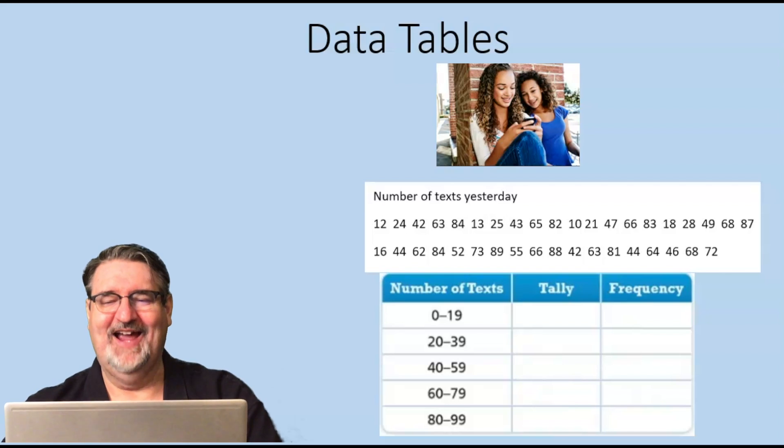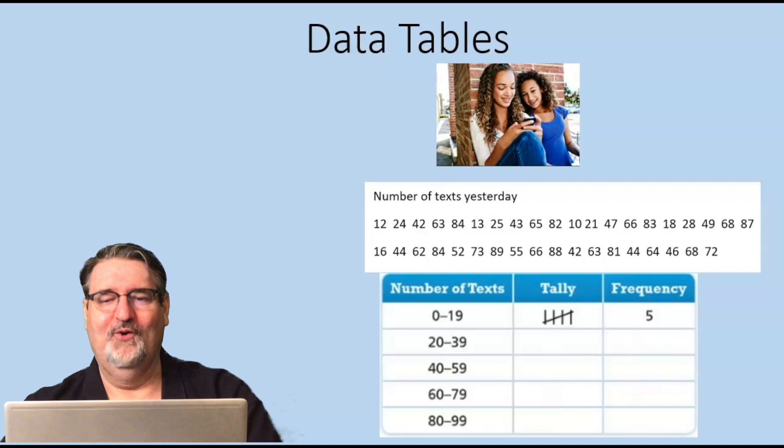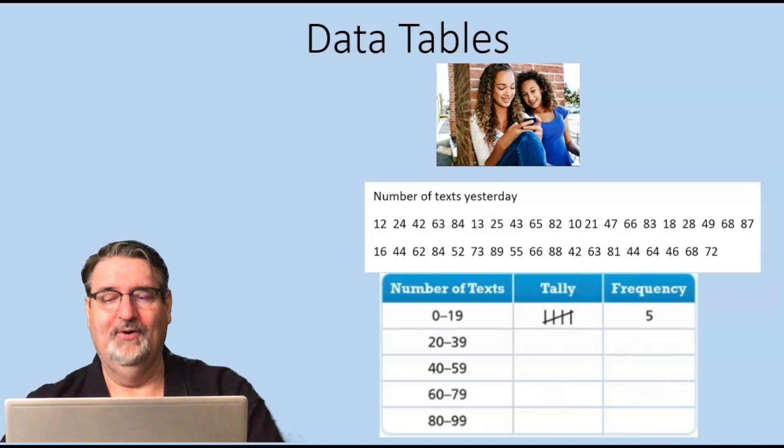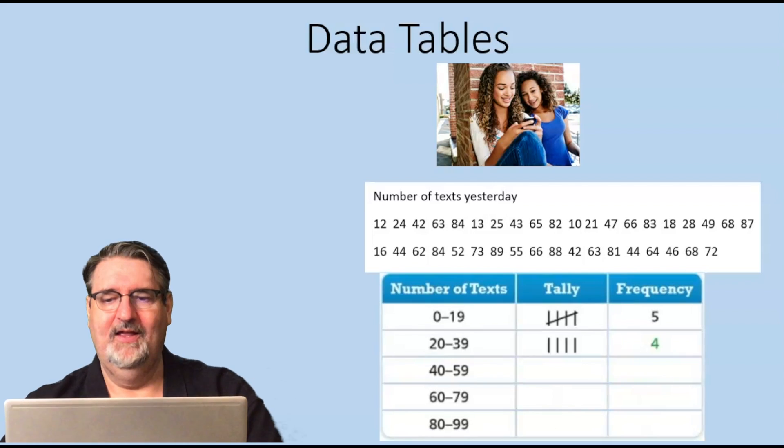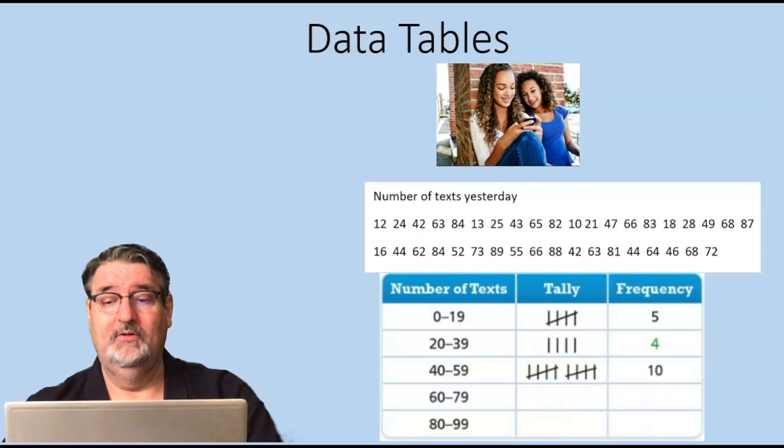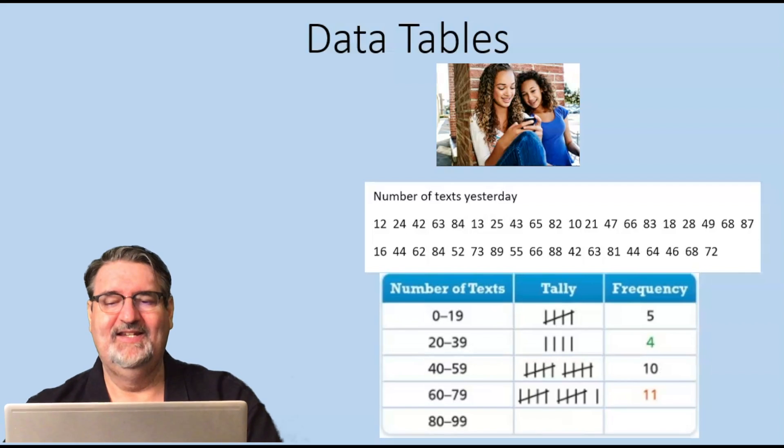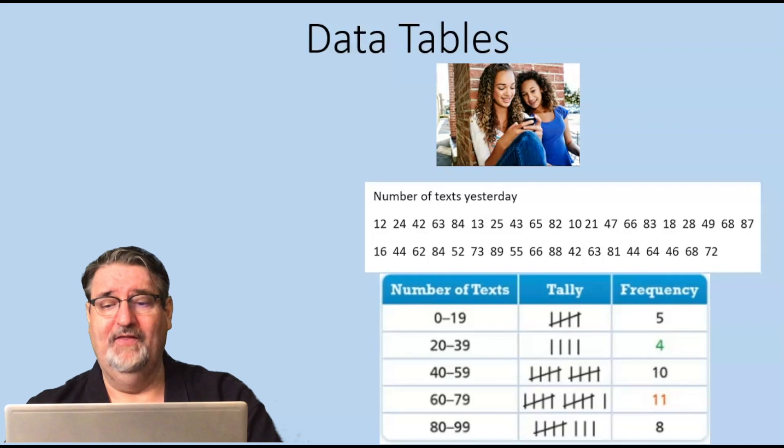Now we make a tally mark for each of those. When we look for those numbers we find that there are five people that sent between 0 and 19 texts, and in the frequency we write the number five. Next we check for 20 to 39 texts in one day and we can see that there are four. The next row says from 40 to 59 and there were 10 people. The next one was 60 to 79 texts and there were 11 people. And finally 80 to 99 texts in one day and there were eight.